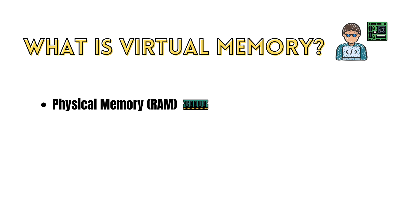First, let's understand what RAM is. RAM is the actual physical memory installed on a computer's motherboard. It is fast but limited in size. The operating system and running applications use RAM to store data that is actively being used or processed.